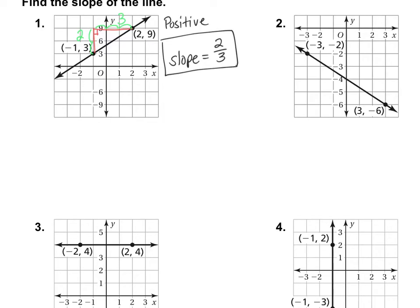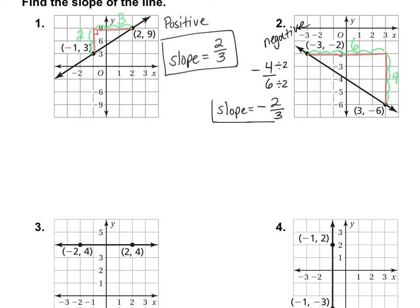Let's take a look at number 2. This time we have a negative slope. Going from one point to the other — straight up, and this time over to the left. Counting: 1, 2, 3, 4 up, and 1, 2, 3, 4, 5, 6 over. So we have negative 4 over 6. Simplifying by dividing by 2 gives us negative 2 thirds. The slope on number 2 is negative 2 thirds.